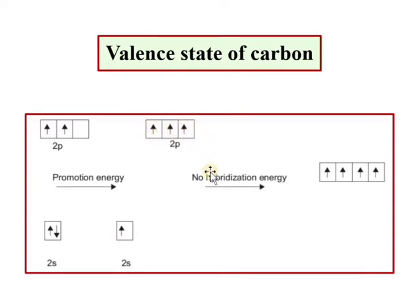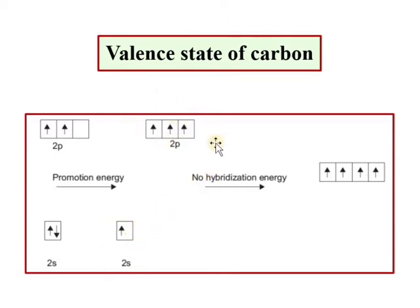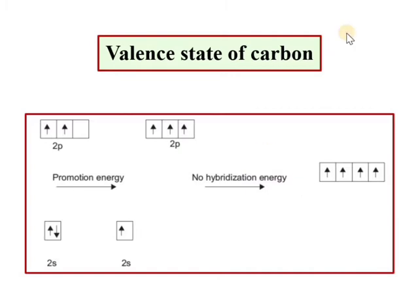The energy of the 2s orbital is higher than that of the 2p orbitals. When half-filled orbitals mix, the energy gained and lost balance out. So overall there is no net change in energy during hybridization. In the case of carbon, there is essentially no hybridization energy cost.